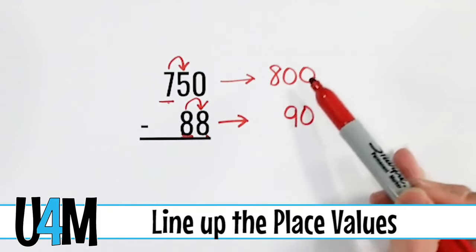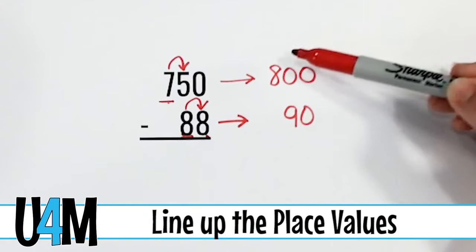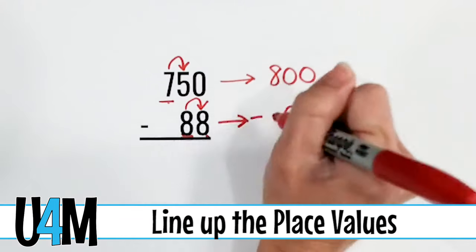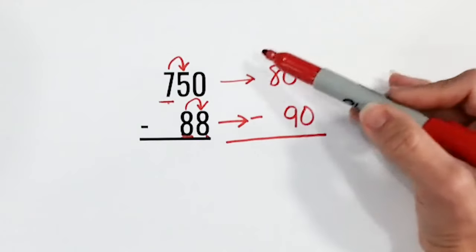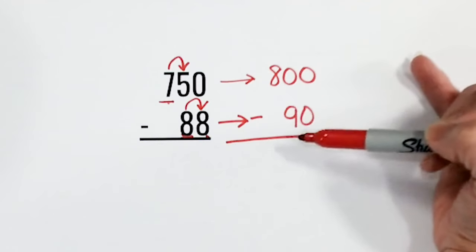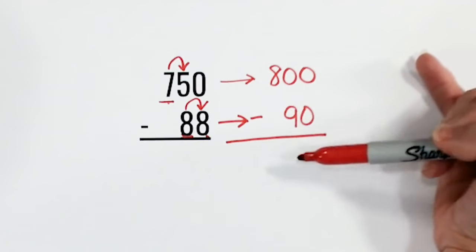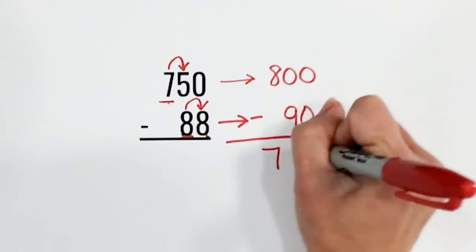Remember, when you're dealing with numbers that are not ending in the same place value, to line those place values up so that you're subtracting the right numbers. So we have 800 minus 90. If I'm using my mental math skills, I can say 800 minus 100 would be 700. And then we'd add that 10 back. So that means that our answer is 710.